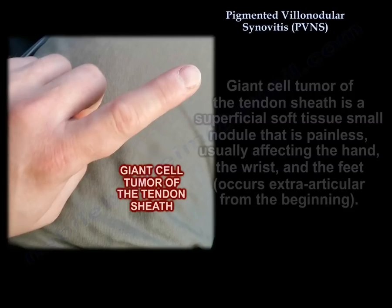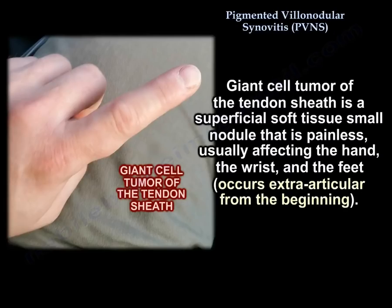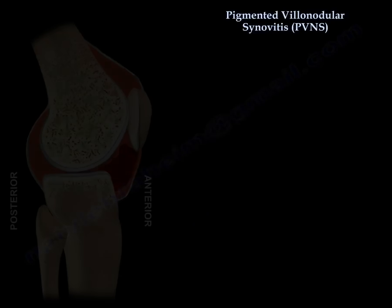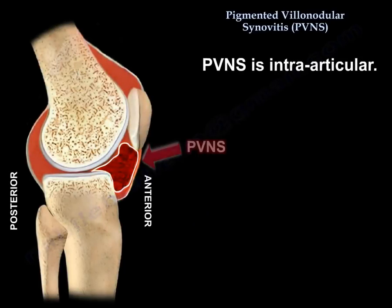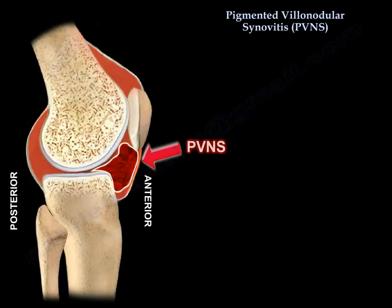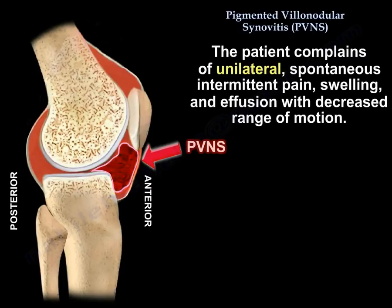Giant cell tumor of the tendon sheath is a superficial, soft tissue, small nodule that is painless. It usually affects the hand, the wrist, and the feet, and occurs extra-articular from the beginning. Pigmented villonodular synovitis, by contrast, is intra-articular.